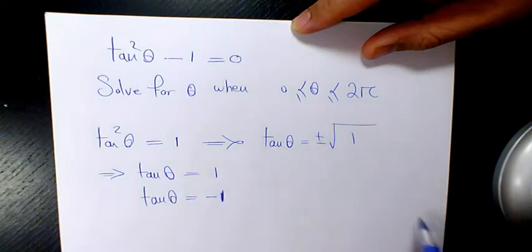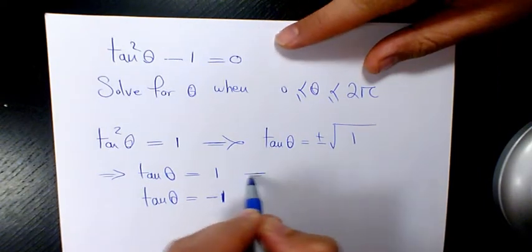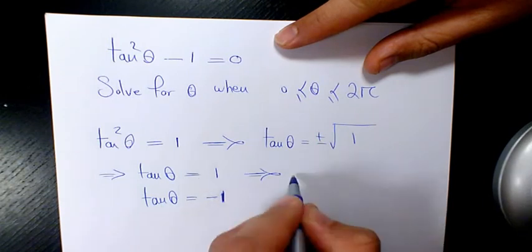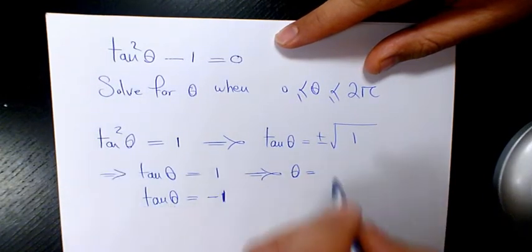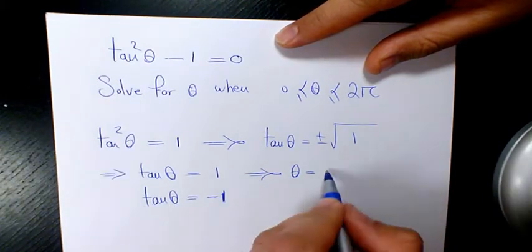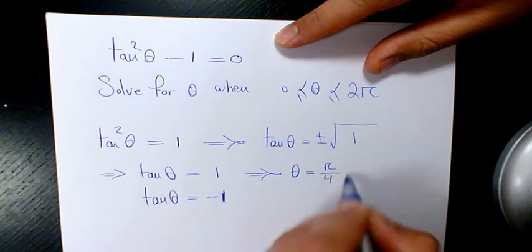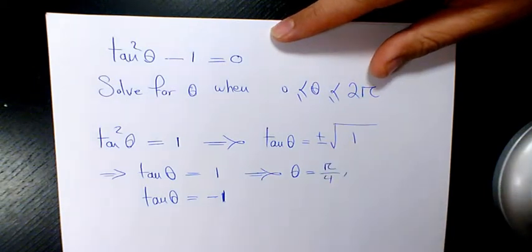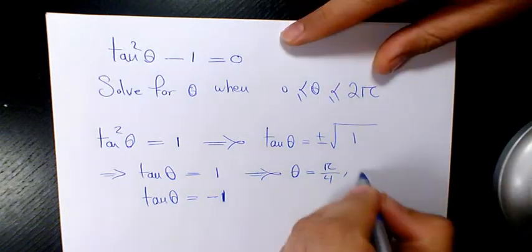So we have two different possible answers. When tan θ = 1, θ will be π/4, and basically we know tan is positive in quadrant 1 and quadrant 3. The other one is